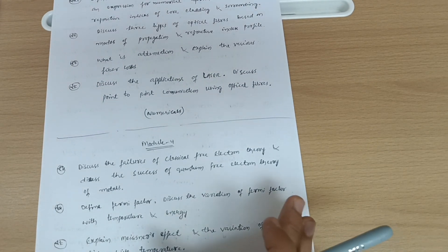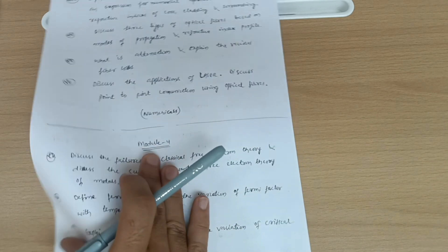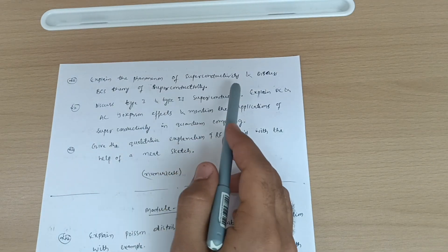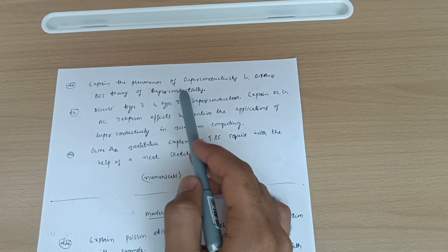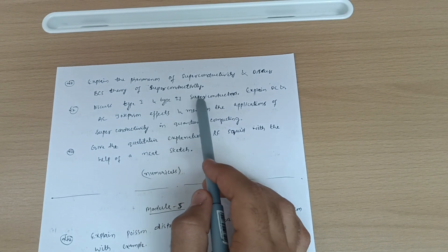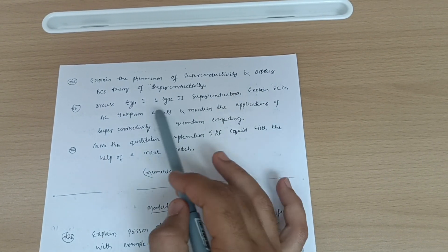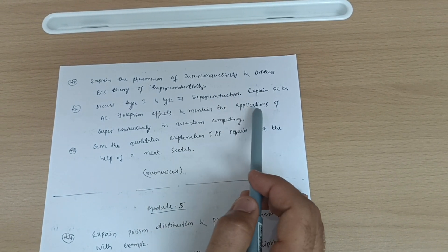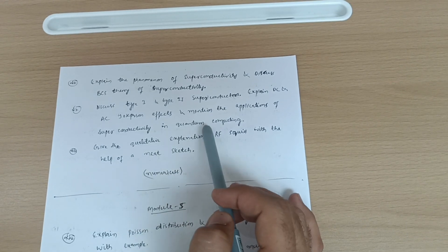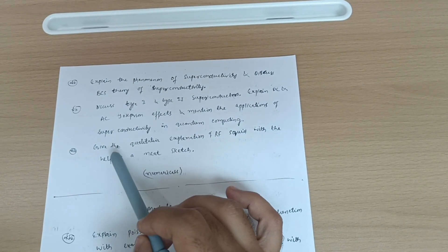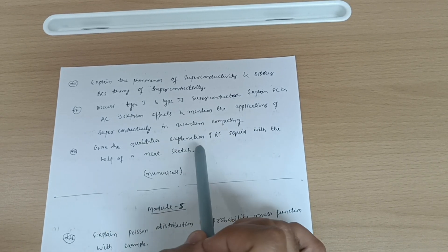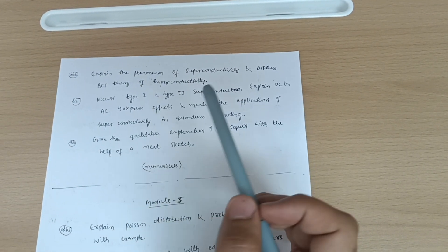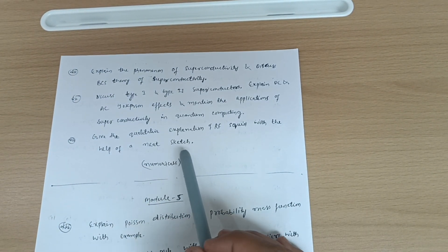Next is explain the phenomena of superconductivity and discuss BCS theory of superconductivity. Discuss type one and type two superconductors. Explain DC and AC Josephson effects and mention the applications of superconductivity in quantum computing. Last question is give the qualitative explanation of E squared with the help of a neat sketch.